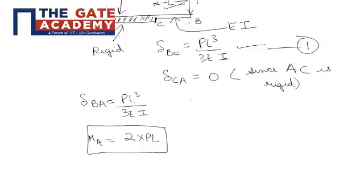And if we talk about deflection of B with respect to A, now since end AC is rigid, deflection of C with respect to A has to be zero. That means deflection of B with respect to A is PL cubed by 3EI.